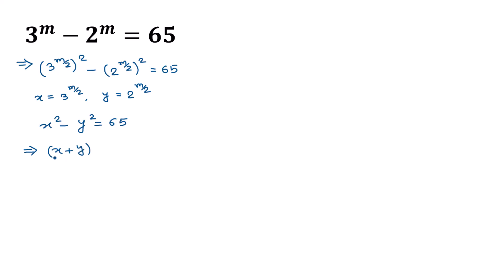x squared minus y squared factors as x plus y times x minus y, equal to 65. Now 65 can be written as 65 times 1, or 13 times 5. Since x plus y is greater than x minus y, we consider two cases.